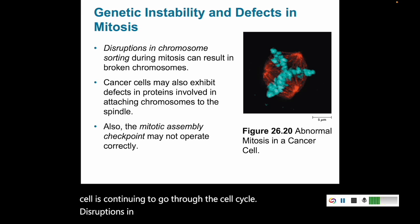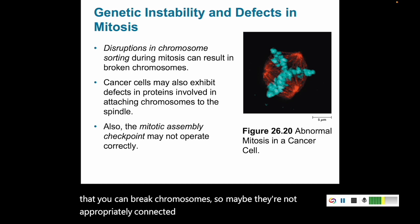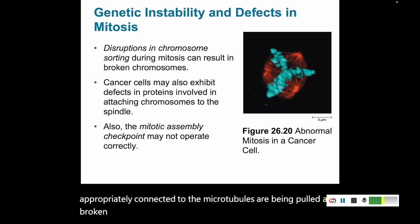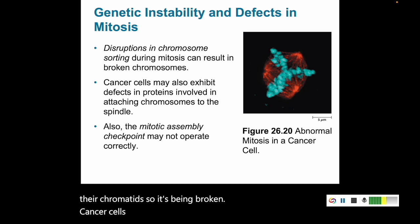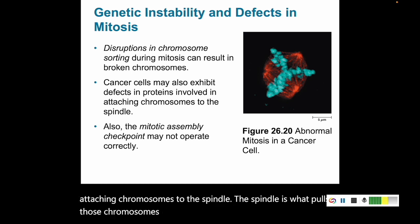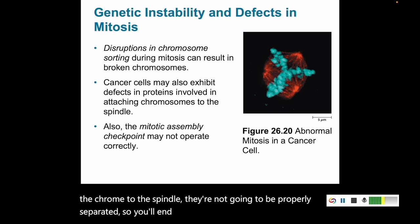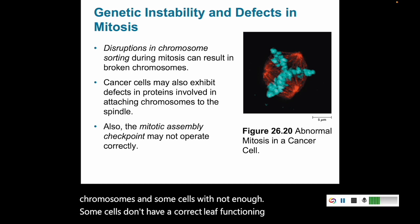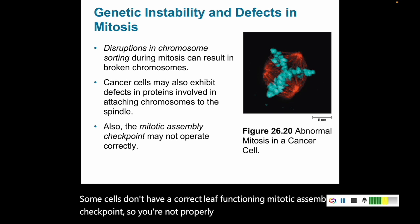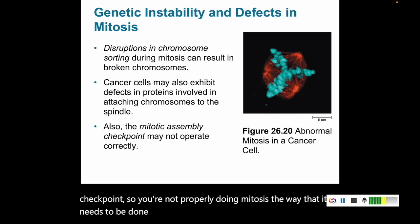Disruptions in chromosome sorting during mitosis is one way you can break chromosomes — maybe they're not appropriately connected to the microtubules and are being pulled and broken, or maybe DNA isn't correctly packaged into chromatids. Cancer cells sometimes have defects in proteins involved in attaching chromosomes to the spindle, so if they're not correctly attached, they won't be properly separated. You'll end up with some cells with too many chromosomes and some with not enough. Some cells don't have a correctly functioning mitotic assembly checkpoint, so all of these can lead to genetic instability through defects in mitosis.